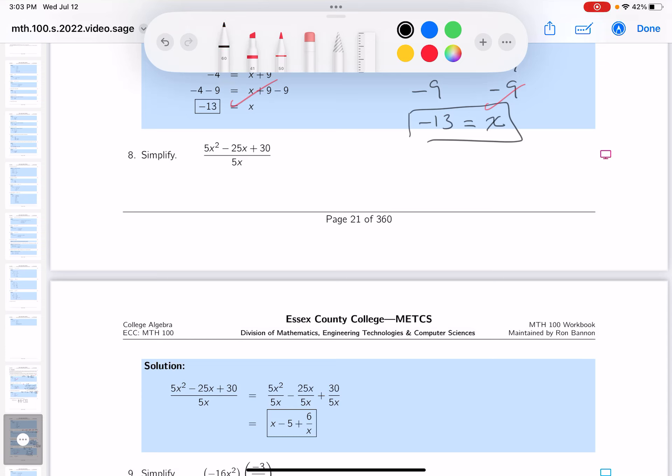Okay, for number eight, they want me to simplify that. It's a monomial divisor and there's three terms on top. My recommendation is to write it down as 5x squared over 5x minus 25x over 5x plus 30 over 5x.